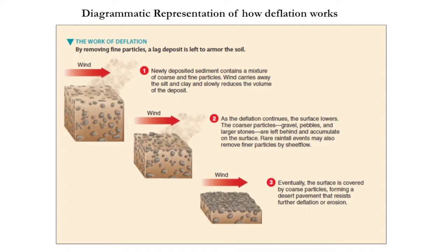This is a diagrammatic representation of how deflation works. The first diagram shows the work of deflation: by removing fine particles, a lag deposit is left to armor the surface. Deflation continues and the more surface area is exposed, the more sand and loose soil particles are removed, eventually turning the region into a desert pavement as the underlying pebbles and rocks become visible.